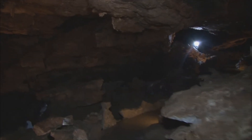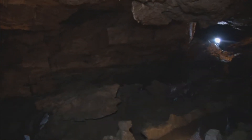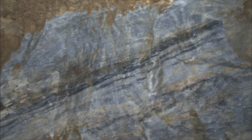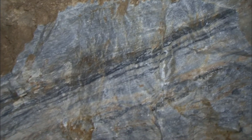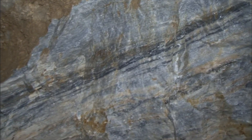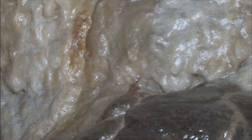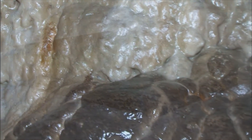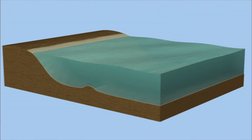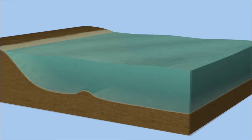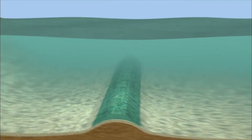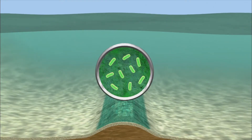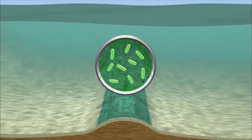Mudstones became argillite, a rock commonly found in the caves. Limestone from that ancient seabed became marble. The origin of the Oregon Caves marble is both unique and maybe a bit surprising. The calcium and carbon elements that make up the rock originated in a massive reef of bacteria about 250 million years ago.